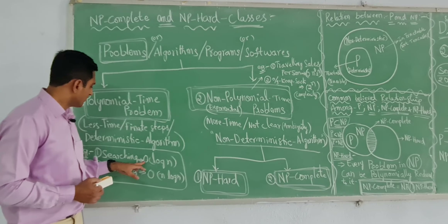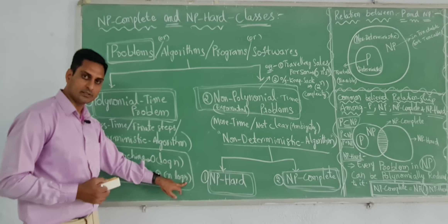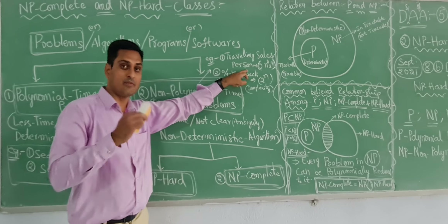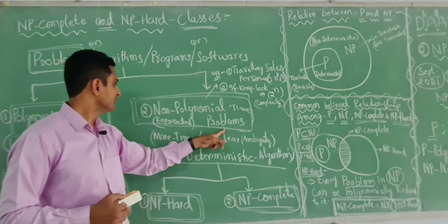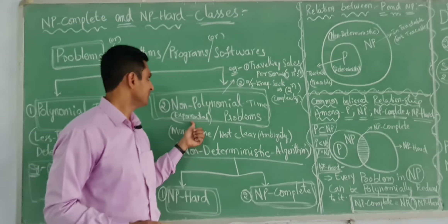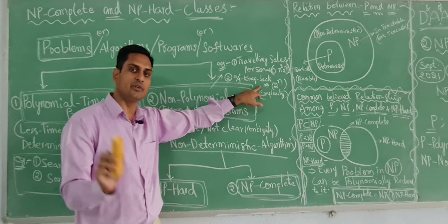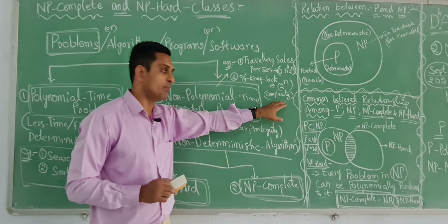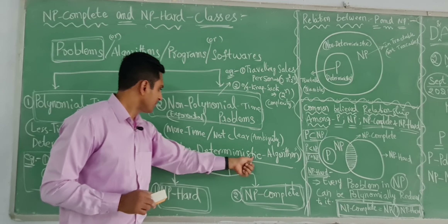The time complexity for polynomial problems is O(log n) or O(n log n). Whereas for non-polynomial, the example is the traveling salesperson problem — I have covered this in a previous video. It takes more time, sometimes with ambiguity. The complexity is O(n² × 2ⁿ) — exponential time. Also the 0/1 knapsack problem has complexity 2ⁿ, exponential. The time complexity is very high — more time, not deterministic algorithms.